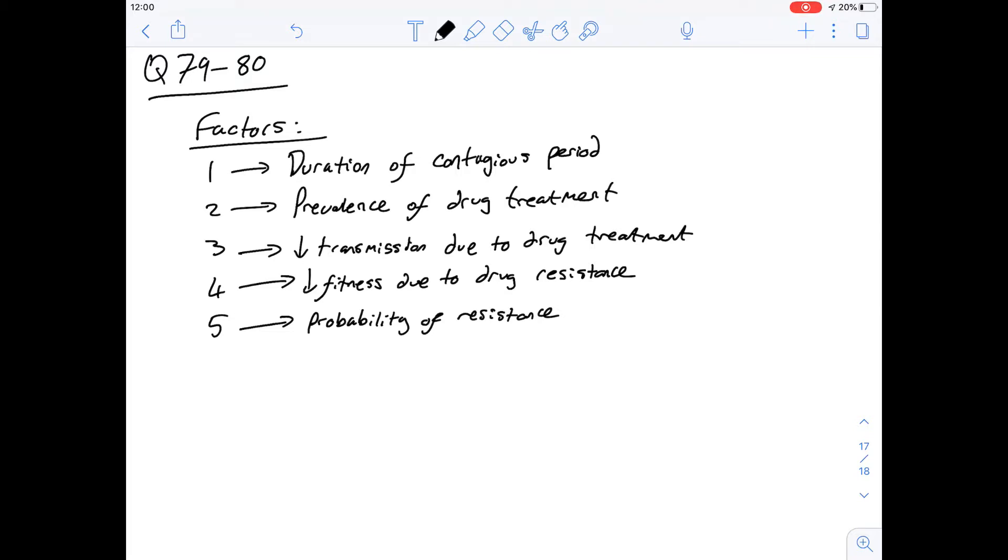So the first one is the duration of the contagious period. Let's think about what would happen if it was longer and if it was shorter. This is the amount of time obviously that someone could pass it on to someone else. But if the duration of the contagious period is shorter, that means the person might be able to fight it off a little bit quicker.